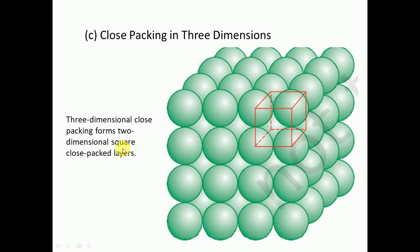We will build three-dimensional close packing by stacking two-dimensional layers. Starting with a two-dimensional square close-packed layer, we label it as layer A1. We then place second, third, and fourth layers above it, aligned horizontally and vertically. When we calculate the coordination number, the neighboring atoms form a cubic shape, giving us a structure based on the square close-packed layers.